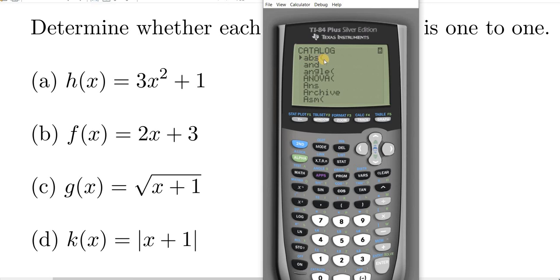So then you hit enter, and boom, it gives you the absolute value bars. It's awesome. Now just type in x plus 1, hit the right arrow key, then just hit graph, and there it is.